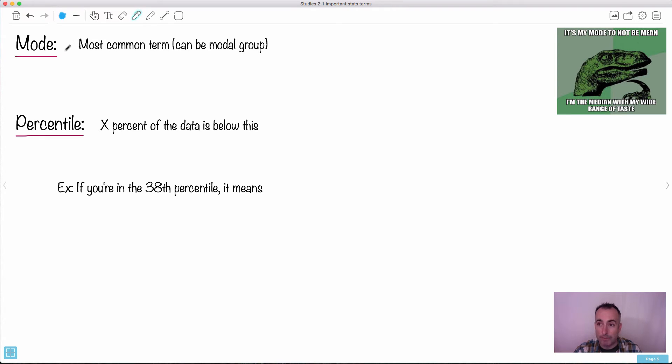Now we've got the mode. I like this: It's my mode to not be mean. I'm the median with my wide range of tastes. It's just using some silly stats terms right. The mode is just the most common one. So in other words if you have a whole bunch of different values and a few of them show up a bunch of times, the one that shows up the most amount of times that's the mode. It's actually pretty straightforward. Percentile however is a lot more interesting. So we're going to go a little bit deeper into that one.